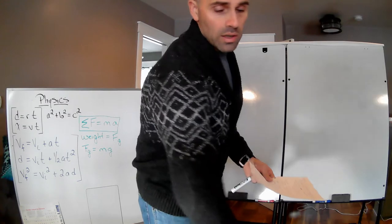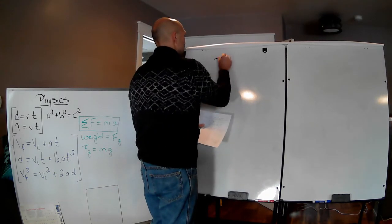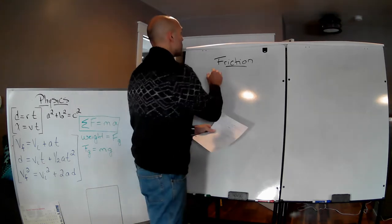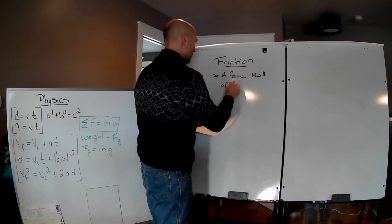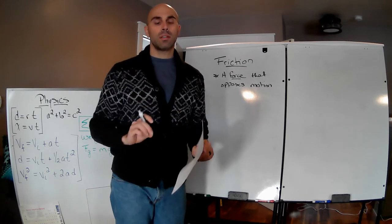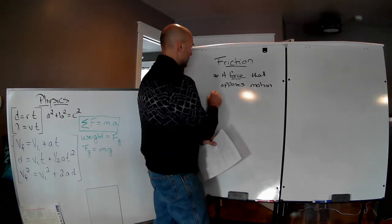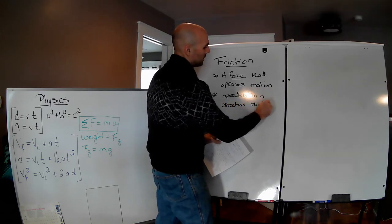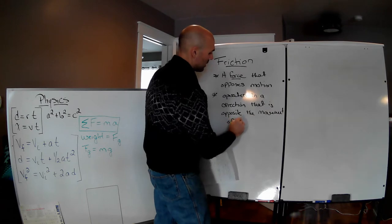So we are going to start and get right into friction. What exactly is friction? Friction is a force — a force that always opposes motion. Now if it's opposing motion, it always, always operates in a direction that is opposite to the motion of the object.